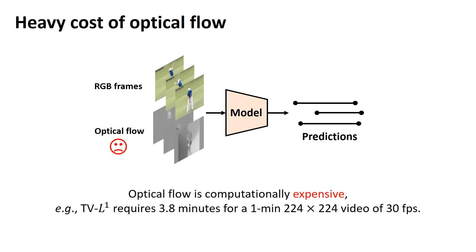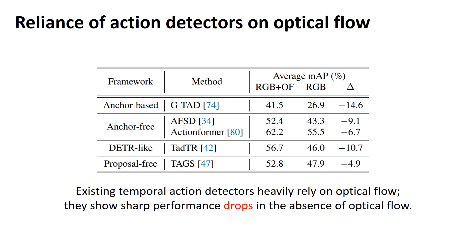So why don't we discard the costly optical flow and perform inference based solely on RGB frames? We conducted a quick experiment to see the reliance of previous action detection models on the optical flow. Not surprisingly, they heavily rely on the optical flow and show sharp performance drops when taking only RGB frames as input.